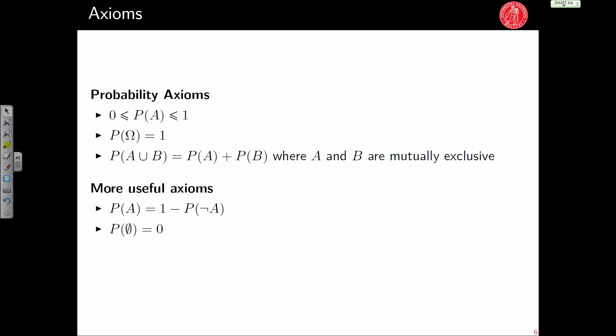Some axioms to state: the probability of any event A must be between 0 and 1 inclusive. The probability of the sample space — getting any outcome — is 1, the certain event. The probability of event A or B equals P(A) + P(B) when A and B are mutually exclusive. Also, P(A) = 1 − P(not A). The probability of the empty set is 0, because you are guaranteed to get some outcome.